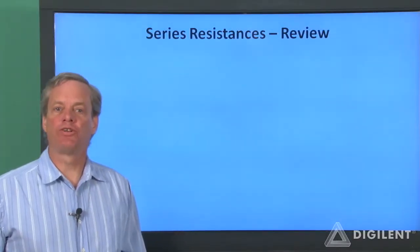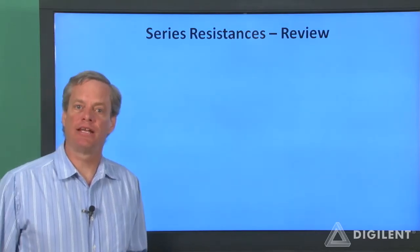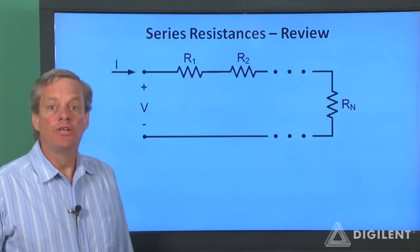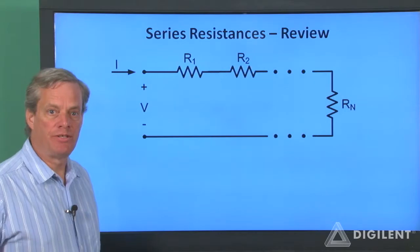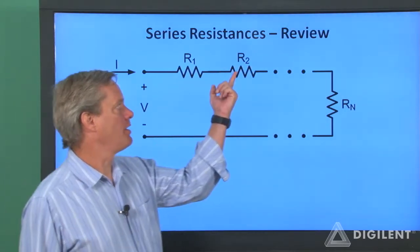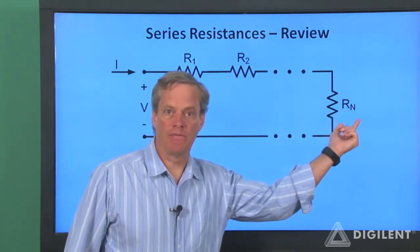First, let's review how to determine the equivalent resistance of a set of series resistors. Suppose, for example, that we have a series combination of n resistors, R1, R2, and so on up to R sub n.